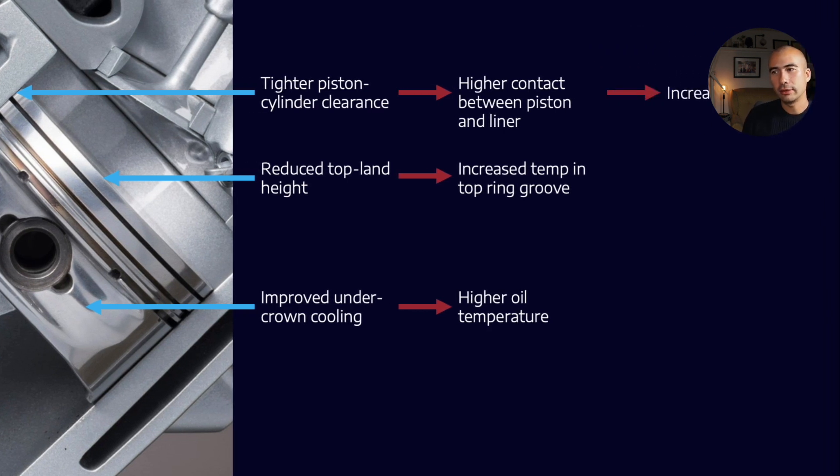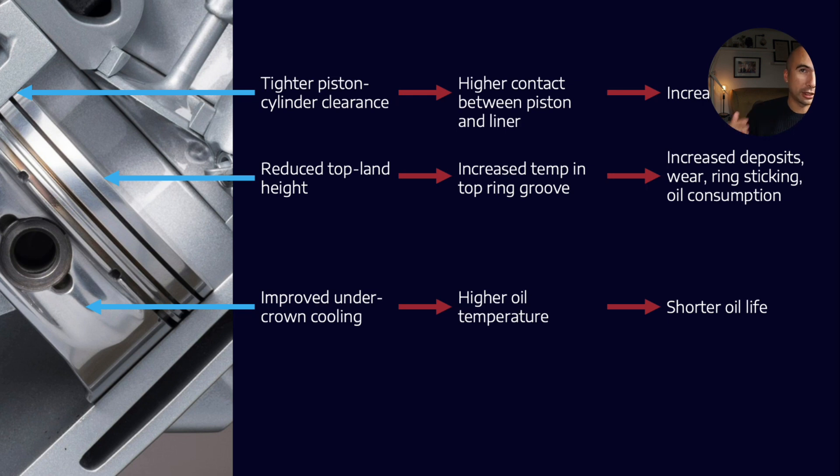Now, if we have higher contact between the piston and the liner, that's going to result in increased wear. If we increase the temperature in the top ring groove, that runs the risk of increased deposits in those ring grooves. Potentially, you can end up with stuck rings as well. And if you have ring sticking, then generally you have higher oil consumption because there's more blow by. With higher oil temperatures, we expect shorter oil life because higher temperatures mean more oxidation. So these are all the things that are impacting the lubricant as a result of changes to piston design. Where there is the potential for increased wear, we need to supplement that with an anti-wear pack. Where we look like we're going to have increased deposits, we need to look at the detergent dispersant formulation. And where there's shorter oil life, we have to move to higher quality base stocks and better antioxidant packages.